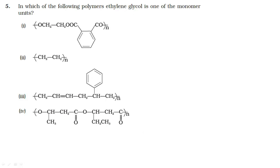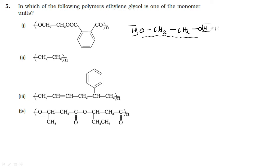In which of the following polymers is ethylene glycol one of the monomers? Ethylene glycol is HO-CH2-CH2-OH — the functional group is OH. Option 1 is our answer.